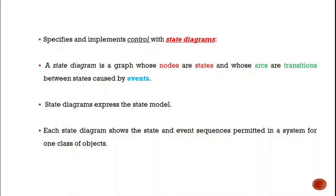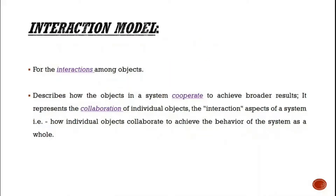Each state diagram shows the states and event sequences permitted in a system for one class of objects. The last model is the interaction model, which describes how the objects in the system cooperate to achieve results. It represents the collaboration of individual objects in an interaction diagram.